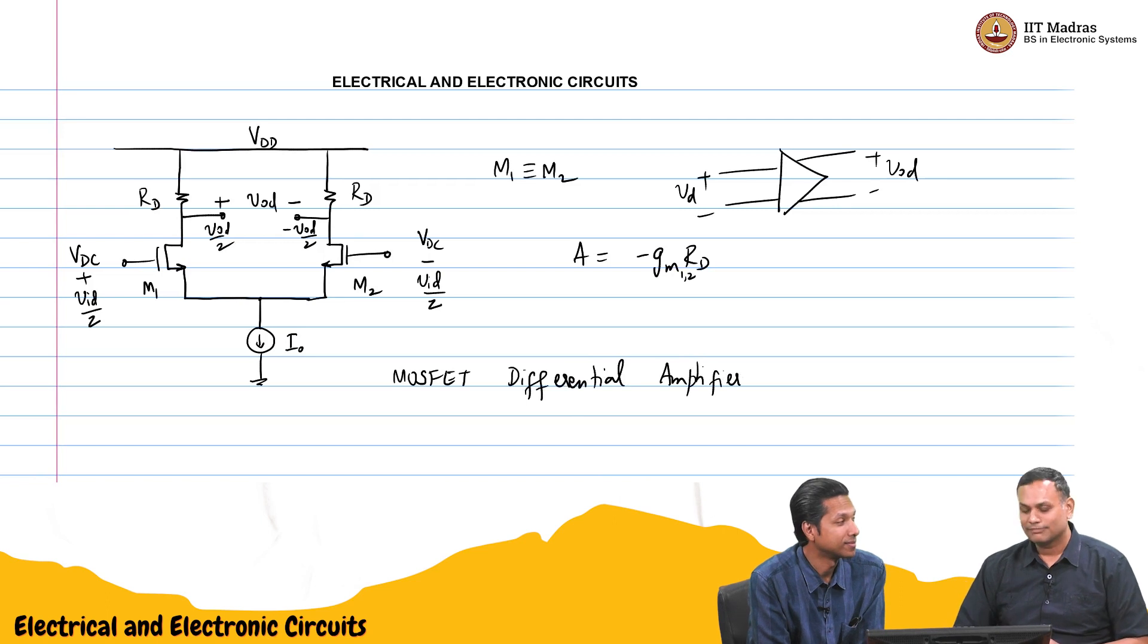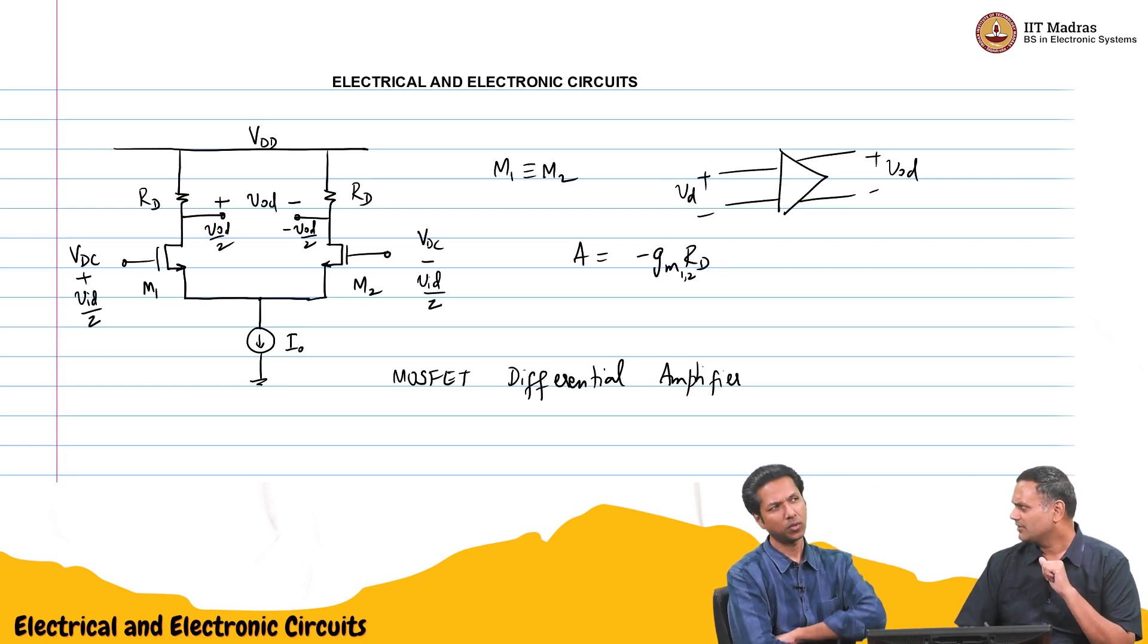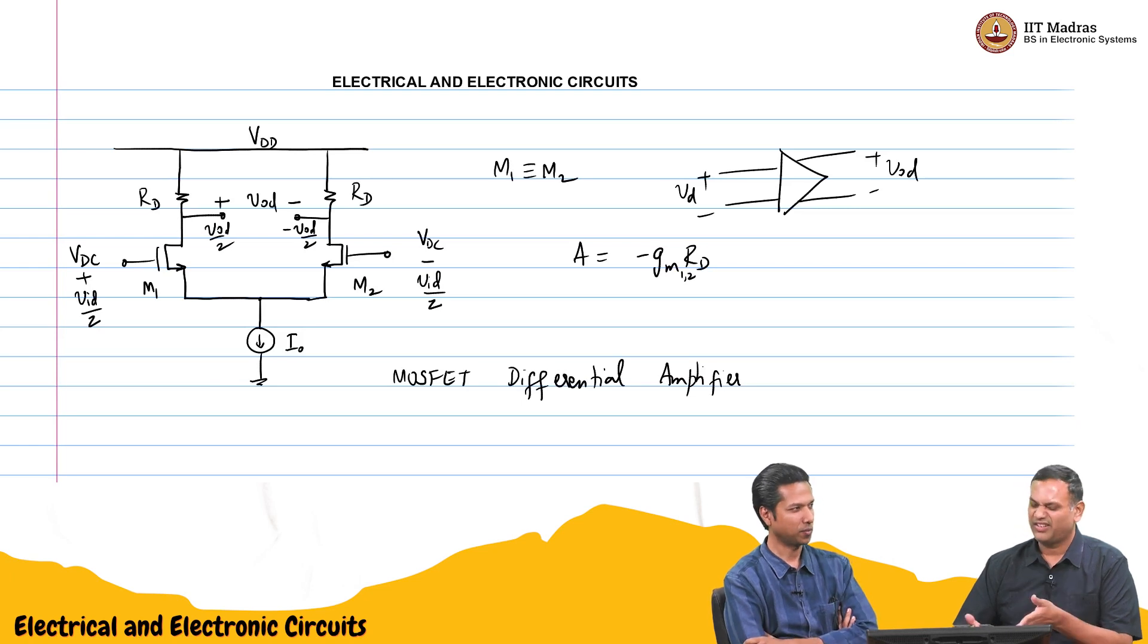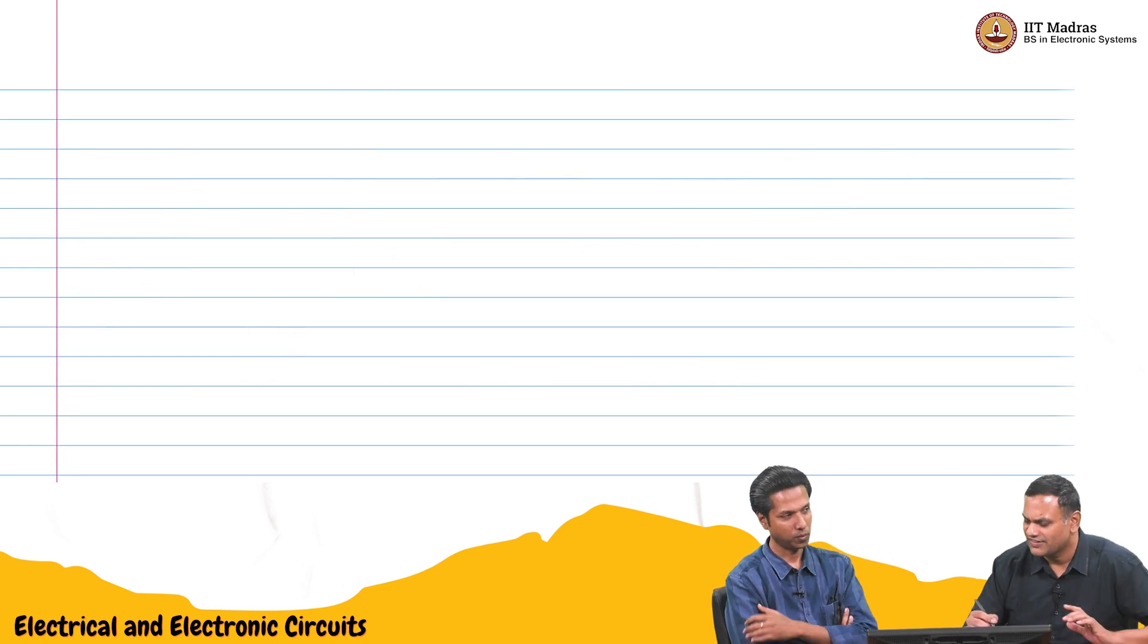Nice. Very similar to the BJT one. What else did we see after? Did we look at any other aspect? See, we have done the other circuits using P and P also. But it is very similar. Well, maybe we can draw it. Shall we just draw the PMOS version of this? That is relatively straightforward. So, I think it will just look like a mirror version of this.